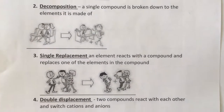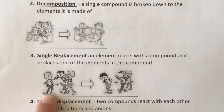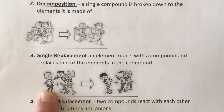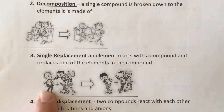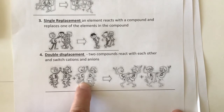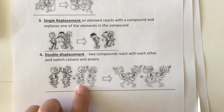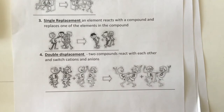Single replacement: we have a single element and a compound. If metal A is more reactive than metal B, then metal A will replace B in the compound. Double displacement is where we have two compounds in the reactants and two compounds in the products — basically they switch. The metals switch with the non-metals; A dances with B and C with D, then after the reaction B and C are together and A and D are together.